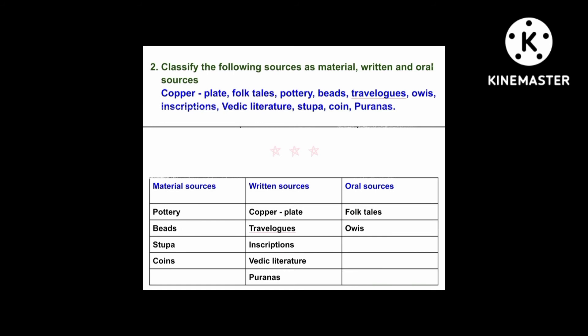The next question is: classify the following sources as material, written, and oral sources. The items to classify are: copper plate, folktales, pottery, beads, travel logs, epics, inscriptions, Vedic literature, stupa, coin, and Puranas.